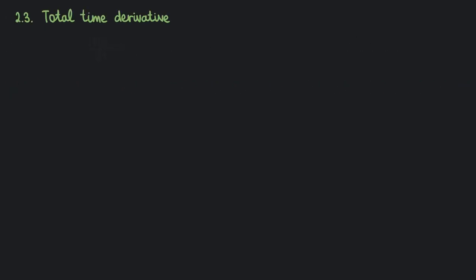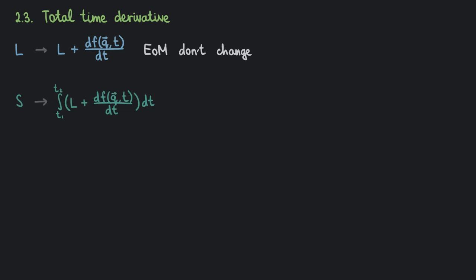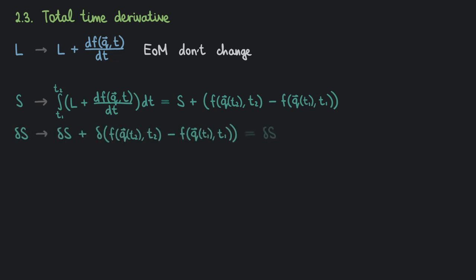Last but not least: if we add to the Lagrangian a total derivative of an arbitrary function of coordinates and time, then the equations of motion won't change. To prove this, let's write down the action that corresponds to the new Lagrangian. The first term gives us the old action, and for the second term, using the fundamental theorem of calculus, we obtain the difference between the values of f at points 1 and 2. Since this is a constant, its variation is equal to 0 — analogous to how the differential of a constant function is also 0. So varying the action for both cases will produce the same result. Thus, the Lagrangian is defined only up to a total time derivative of an arbitrary function of coordinates and time.